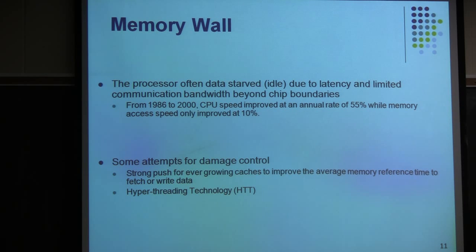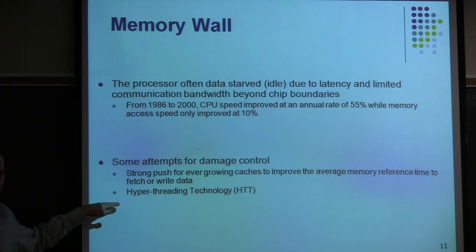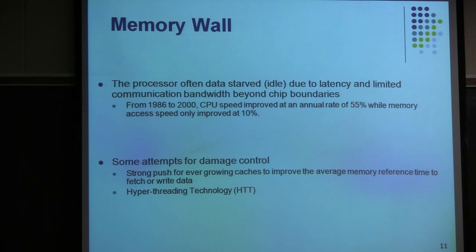There are some attempts for damage control here. There is a strong push for larger caches, and recently there's been a resurgence in hyper-threading technology — it was there for a while, disappeared, and now it came back. The idea is that you have one physical core, and through hyper-threading it creates a shadow or clone of it — a virtual second core — so that computation is handled more effectively. I'm going to talk about this, because this idea, pitched slightly differently, shows up in GPU computing and is one of the key factors that makes GPU computing so powerful.